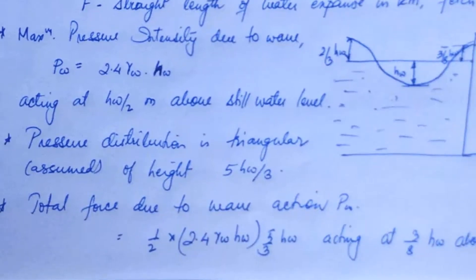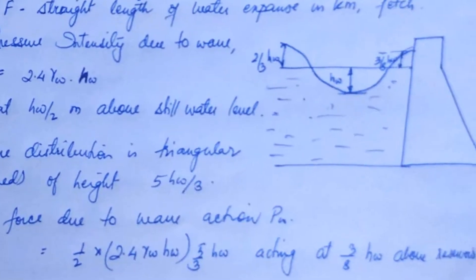The pressure distribution is triangular. It is assumed to be triangular, and the height is 5 hw by 3.